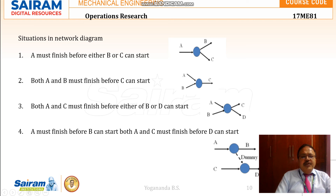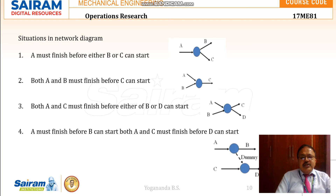Here are the situations in the network diagram. First: A must finish before either B or C can start — I can start B and C only when A is completed. Second: both A and B must finish before C can start — only when A and B are completed can activity C be started. Third: both A and C must finish before either B or D can start.